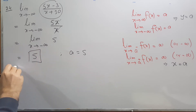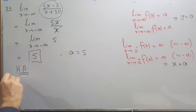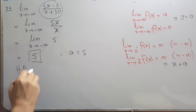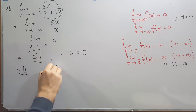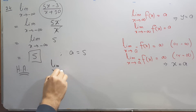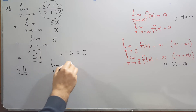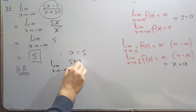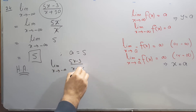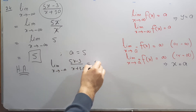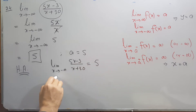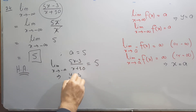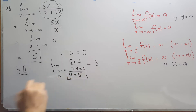The horizontal asymptote: since the limit as x approaches positive or minus infinity of (5x - 3)/(x + 10) equals 5, this implies our horizontal asymptote is y equals 5.